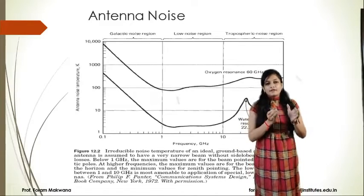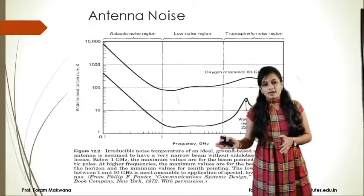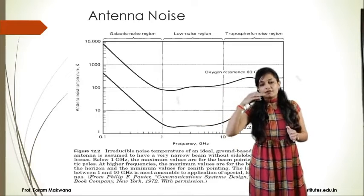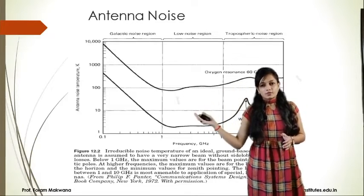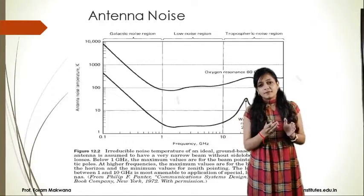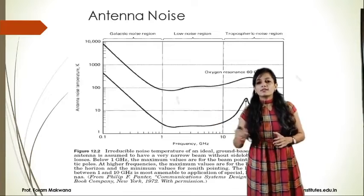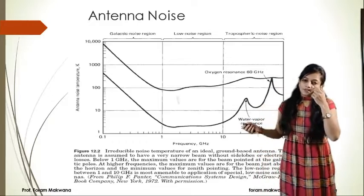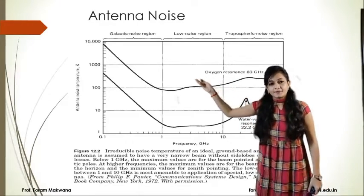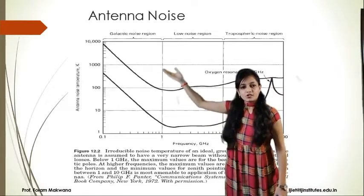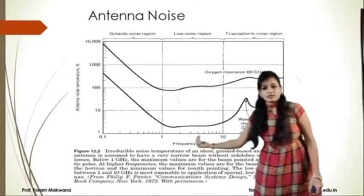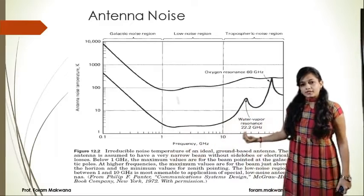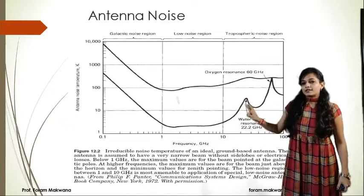The effect of atmosphere is always present. In the atmosphere, there is water content and different gases like oxygen and nitrogen. The effect of these gases will also introduce loss in the system. This graph represents antenna noise temperature in Kelvin versus frequency. As frequency increases, my antenna noise temperature will get two peaks.